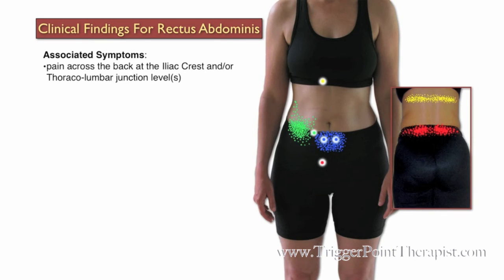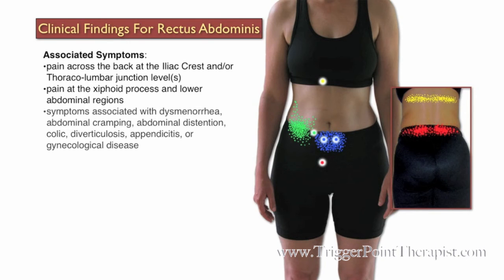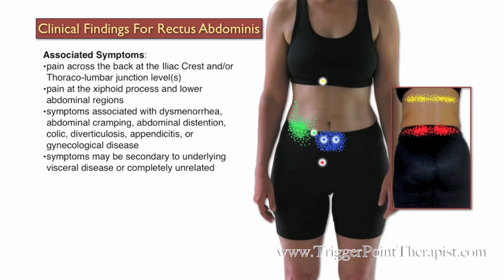Associated symptoms for trigger points in the rectus abdominis muscle — commonly referred to as the six-pack muscle — include pain across the back at the iliac crest and or the thoracolumbar junction levels, pain at the xiphoid process and the lower abdominal regions, and symptoms associated with dysmenorrhea, abdominal cramping, abdominal distension, colic, diverticulosis, appendicitis, or gynecological disease. These symptoms may be secondary to underlying visceral disease or they could be completely unrelated.